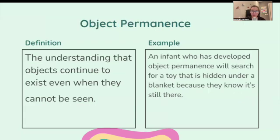Object permanence: the understanding that objects continue to exist even when they cannot be seen. An infant who has developed object permanence will search for a toy that is hidden under a blanket because they know it's still there.